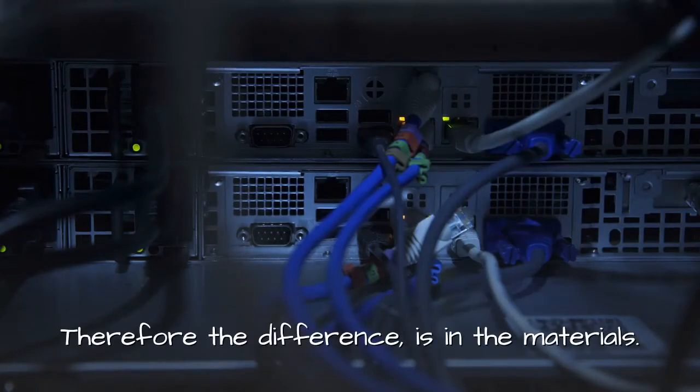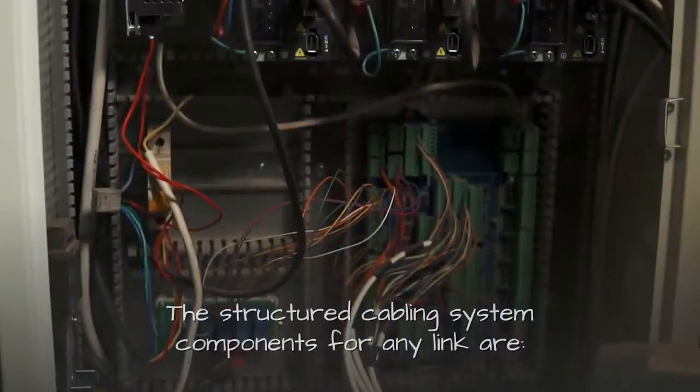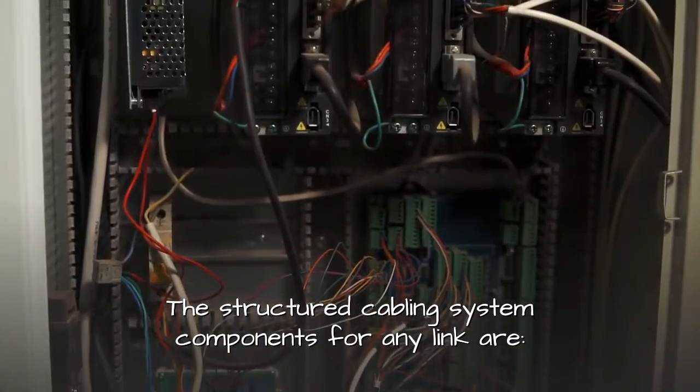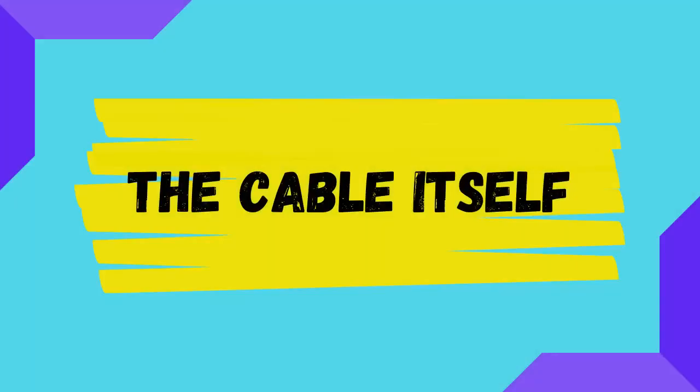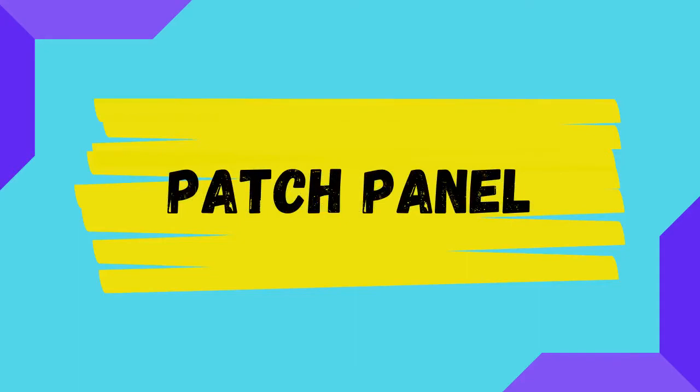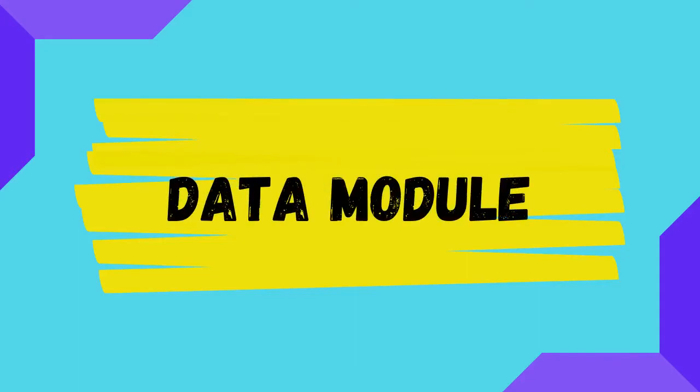Therefore, the difference is in the materials. The structured cabling system components for any link are: the cable itself, patch panel, data module, and patch leads.